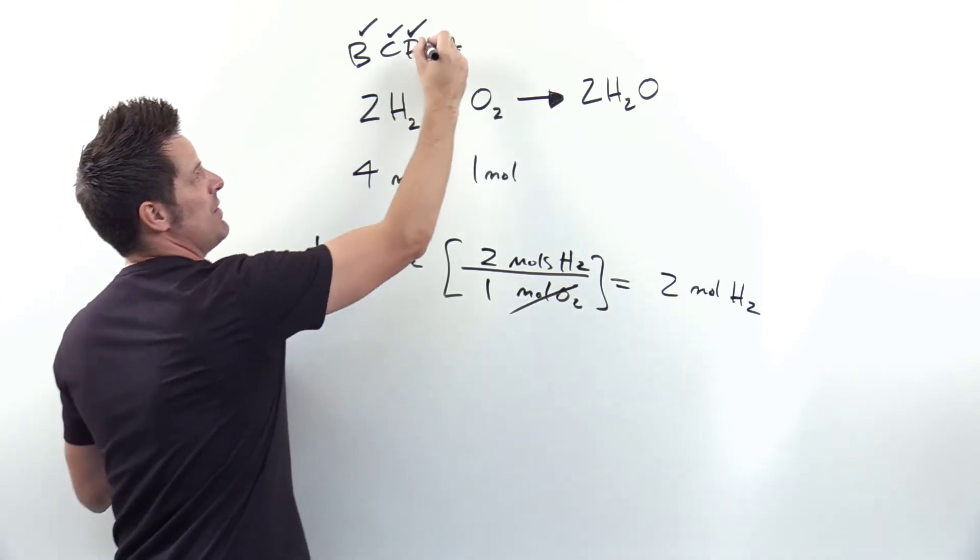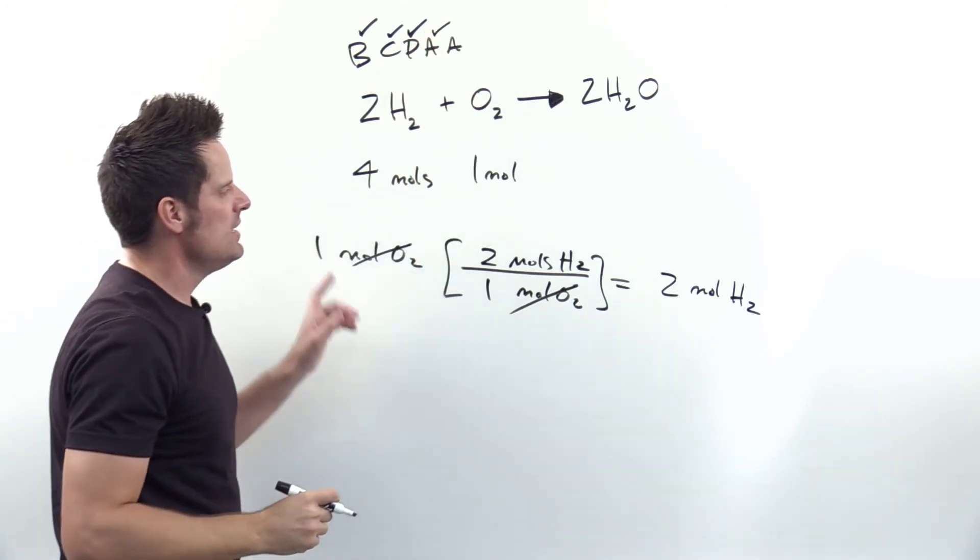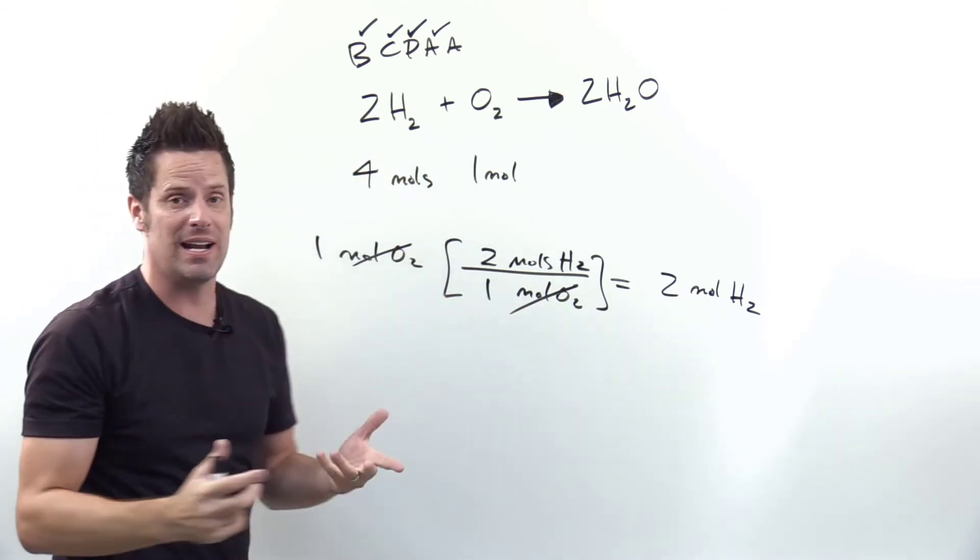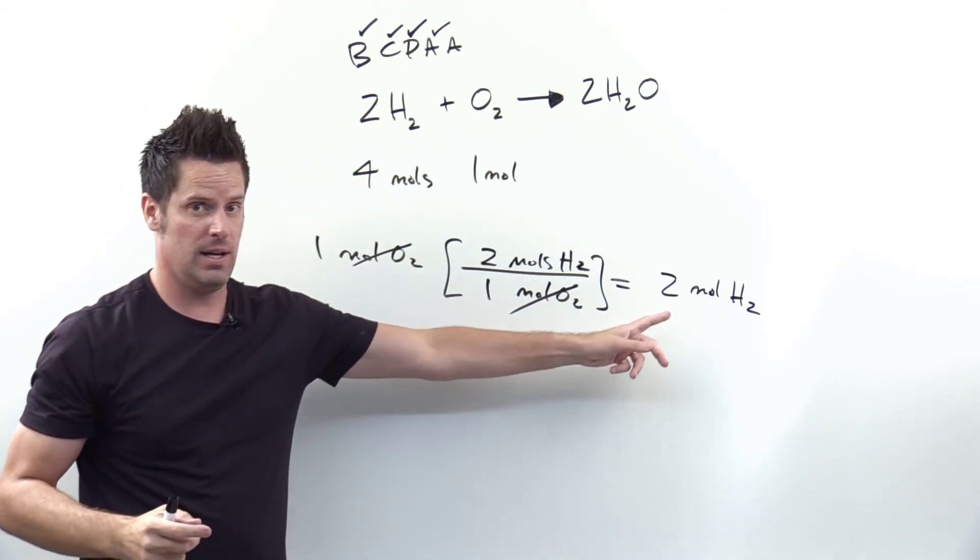So part A we've just done, or the first A of BICPA, asks if I have this many moles of O2, 1 mole of O2, how many moles of the other thing, H2, do I need? The answer is 2.